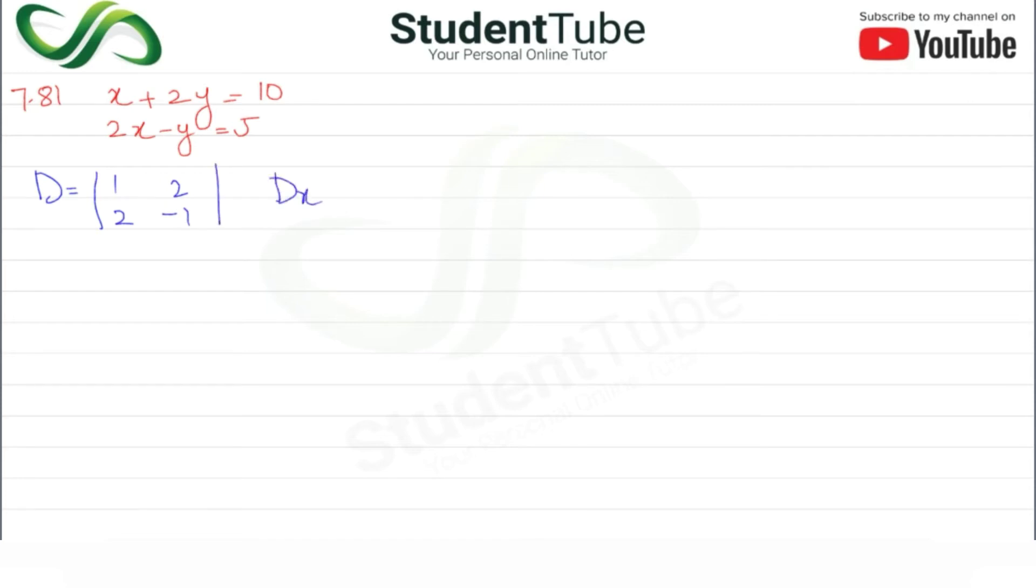Then Dx. What is Dx? We have c1 and b1, so c is 10 and b is 2, then 5 and minus 1. Then Dy - what is Dy? We have a1 and c1, so 1 and 10, and 2 and 5.